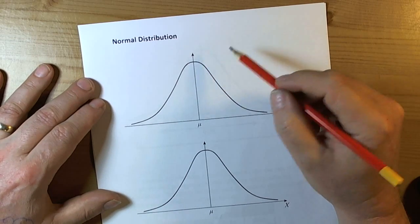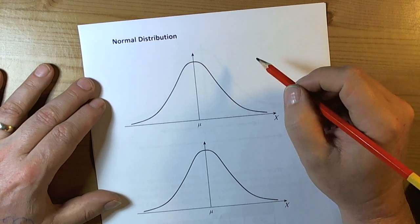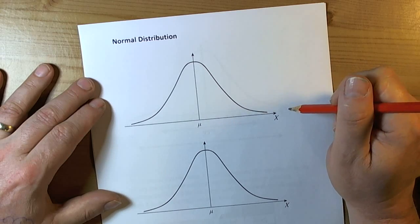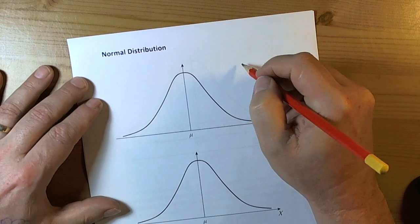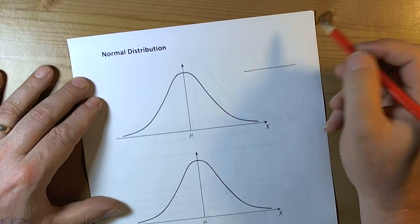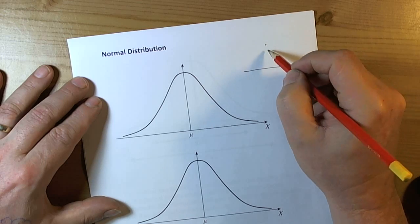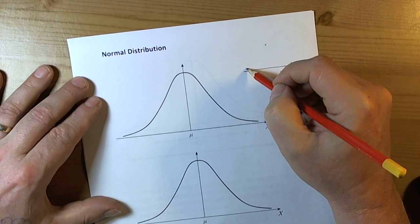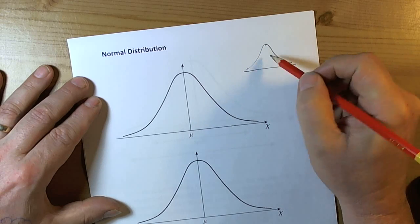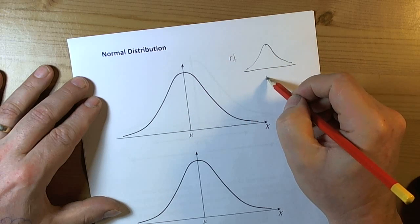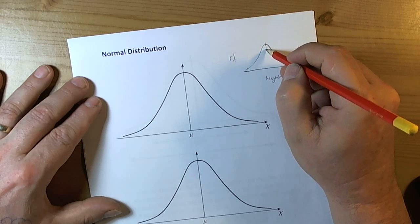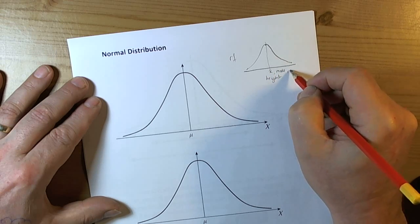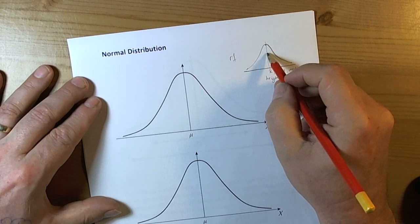Most natural events — like the heights of people, the lengths of leaves on a tree, the time it takes to travel certain journeys — if you plot a large sample of those they'll produce this general kind of curve. If we took the heights of a large sample of adult females, it's quite logical that you'd have an average height with some smaller and some taller people. If we drew all that data on a graph plotting relative frequency against height, it would have a fairly symmetrical shape where the mean, mode, and median are all the same value.